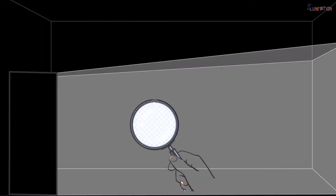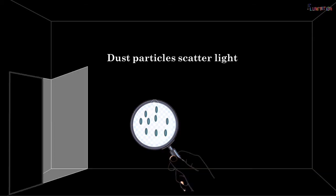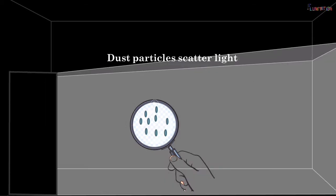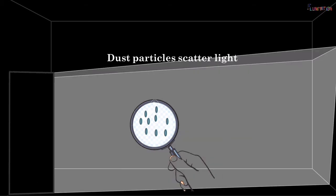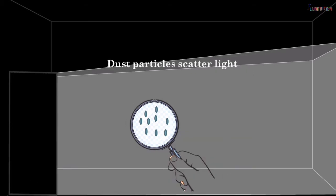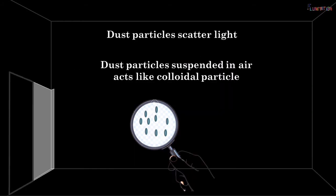This is because the tiny dust particles present in the air of the room scatter the beam of light all around the room, and when the scattered light enters our eyes we can see the beam of light. Here the dust particles act as colloidal particles.